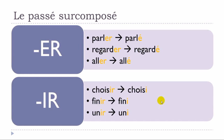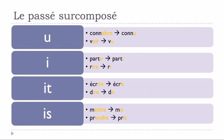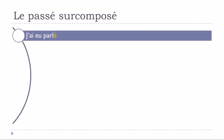For the third group — irregular verbs — here are some key examples: connaître → connu, voir → vu, partir → parti, rire → ri, écrire → écrit, dire → dit, mettre → mis, prendre → pris.